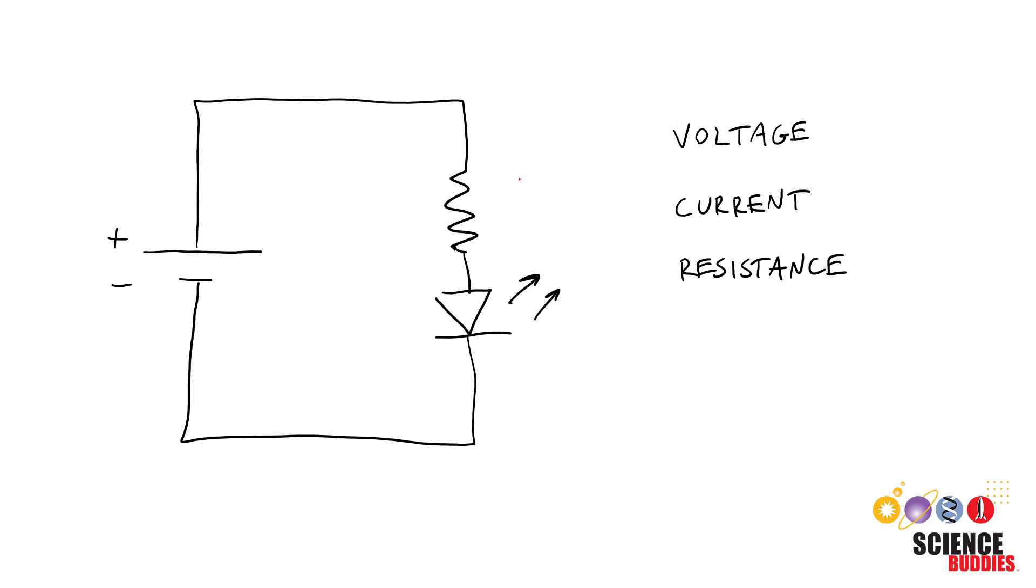In this video we will walk through an example problem to show how to calculate the current limiting resistor value in a circuit with a single battery and single LED.